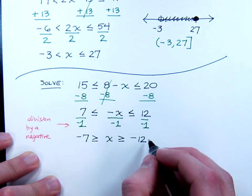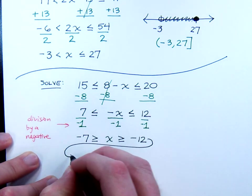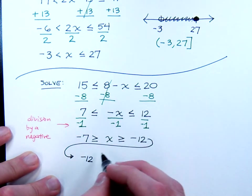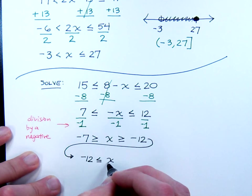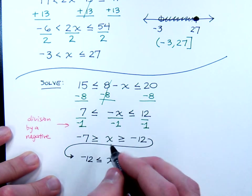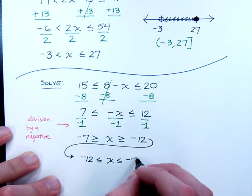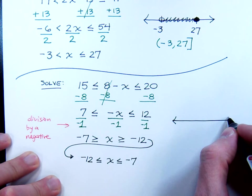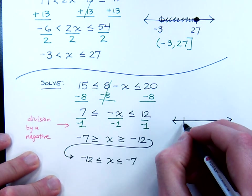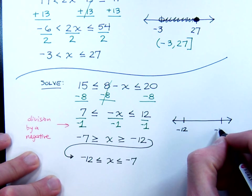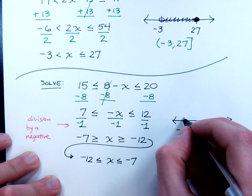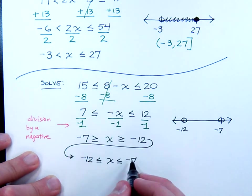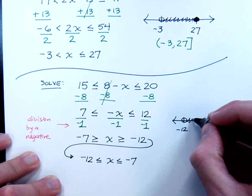If we rearrange this and put the negative 12 in front, the inequality symbol still needs to be pointing towards the negative 12. So it's now less than or equal to x. This symbol needs to be pointing to the x, less than or equal to the negative 7. You don't have to rewrite that, but I find it helpful to do that just so I can get the right order on my number line. I'm going from negative 12 to negative 7. I know that x is between these two values. It's larger than negative 12, less than negative 7.